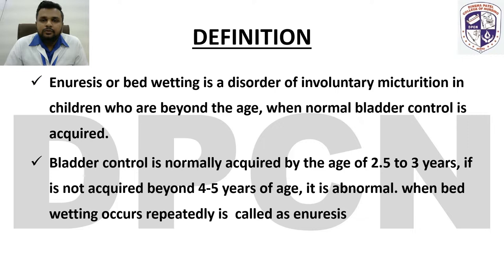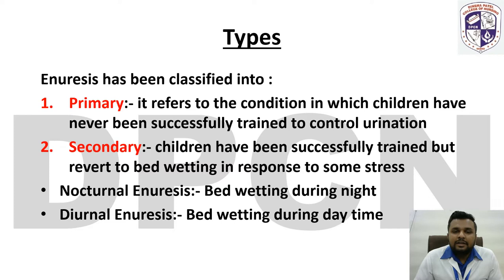If bladder control is not acquired beyond 4 to 5 years of age, it is abnormal, and when bed wetting occurs repeatedly it is called enuresis. There are mainly two types of enuresis: primary and secondary. Primary refers to the condition in which children have never been successfully trained, while secondary refers to children who revert to bed wetting in response to some stress. Secondary enuresis is further divided into nocturnal enuresis, meaning bed wetting during the night, and diurnal enuresis, meaning bed wetting during the day.